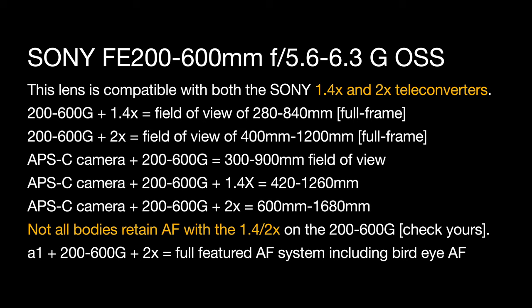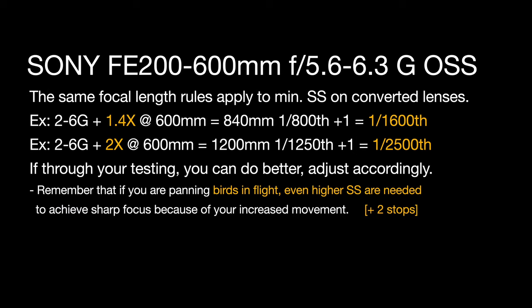Remember that not all bodies retain autofocus with the 1.4x and the 2x attached to the 200-600G, so you may want to check online to see if your camera can or can't. The Alpha 1 with the 200-600G can use the 2x with every feature of autofocus, including tracking and even bird-eye AF in video — it's pretty astounding. Also, the same focal length rules apply to minimum shutter speed on converted lenses. So if you have the 200-600G and add the 1.4x converter, the closest shutter speed to 840mm would be 1/800th of a second, plus 1 would be 1/1600th of a second. If you've got the 2x on, you're at 1200mm, so the closest shutter speed would be 1/1250th, plus 1 would be 1/2500th of a second.